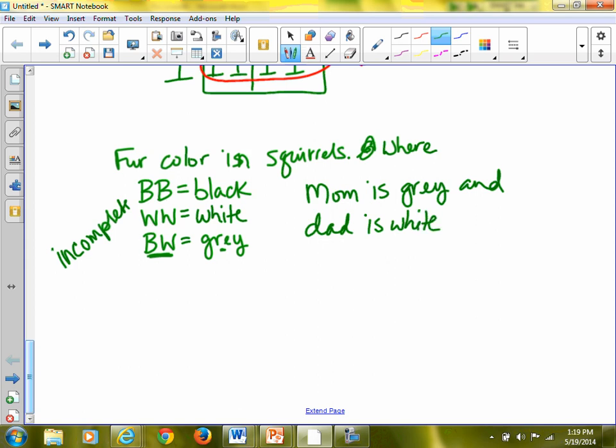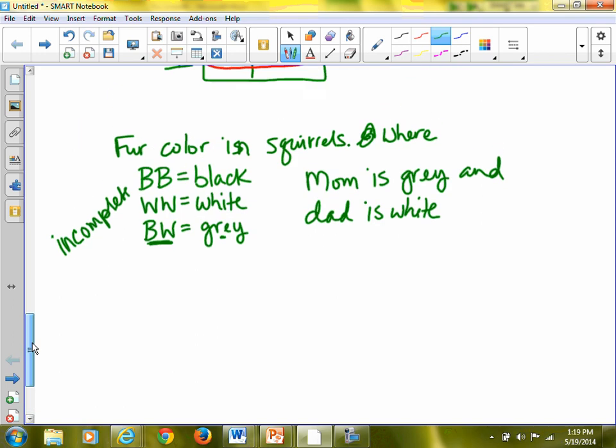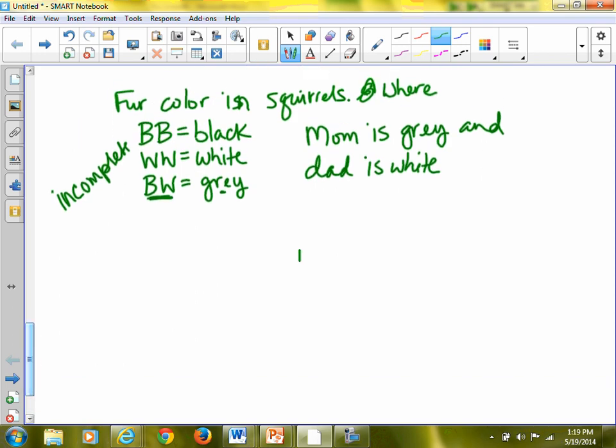So let's say I gave you a problem where mom is gray and dad is white. We make a Punnett square. Mom is gray. So gray is already given to us, B, W. And dad is white. There it is. W, W. We fill it in.